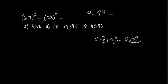So it's 49 minus 0.09. Taking off 0.09, it's definitely gonna be less than 49. So this is out. This is too small in terms of 7.0, and 40.96 might be a little bit too small. Therefore the answer should be about 44.8.